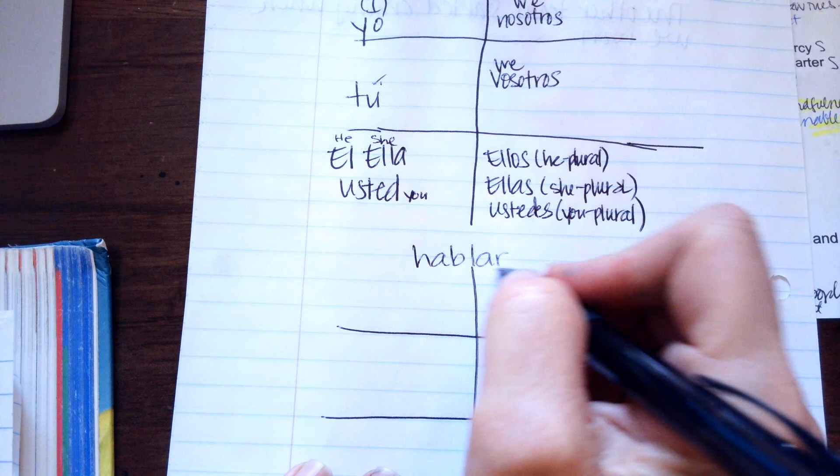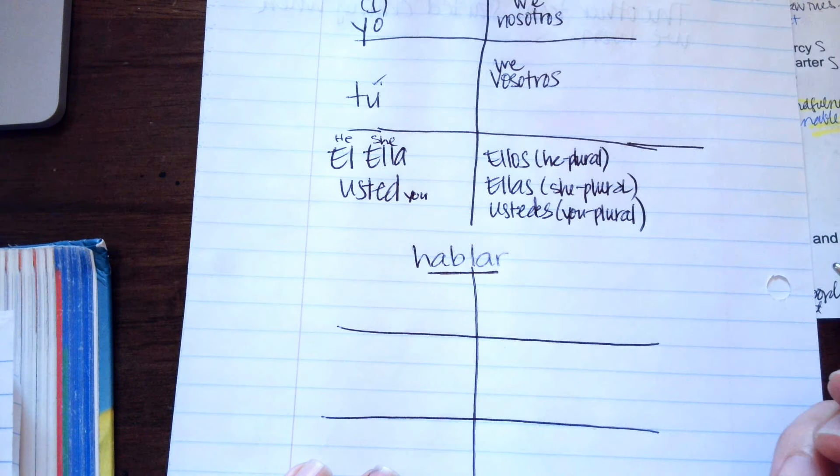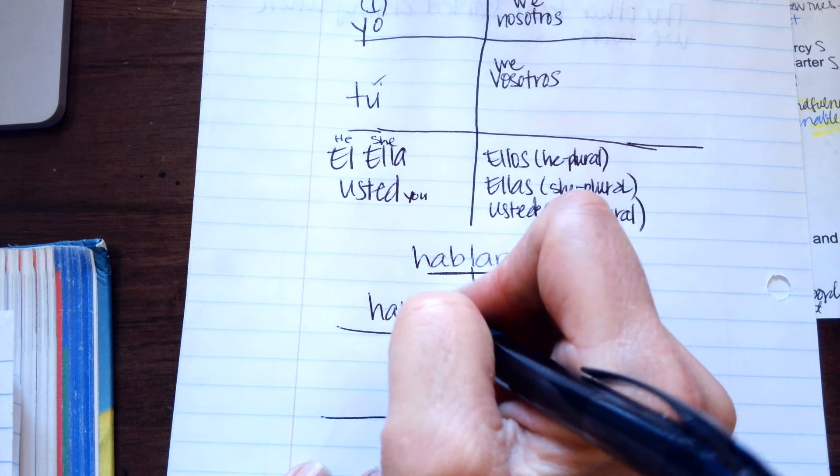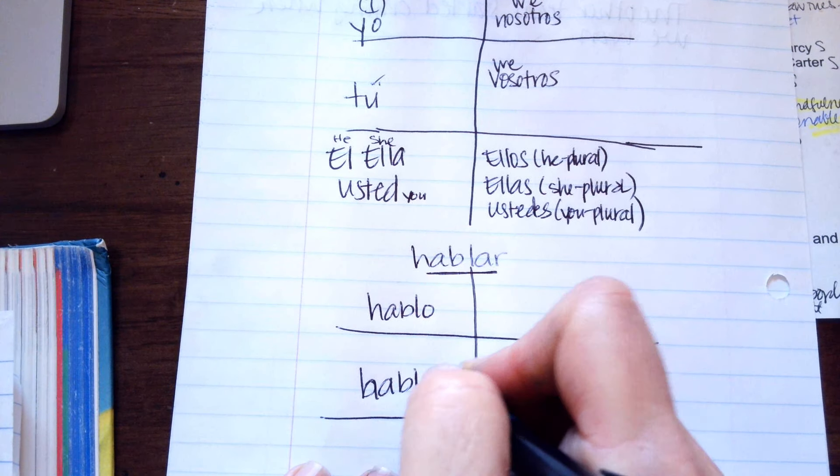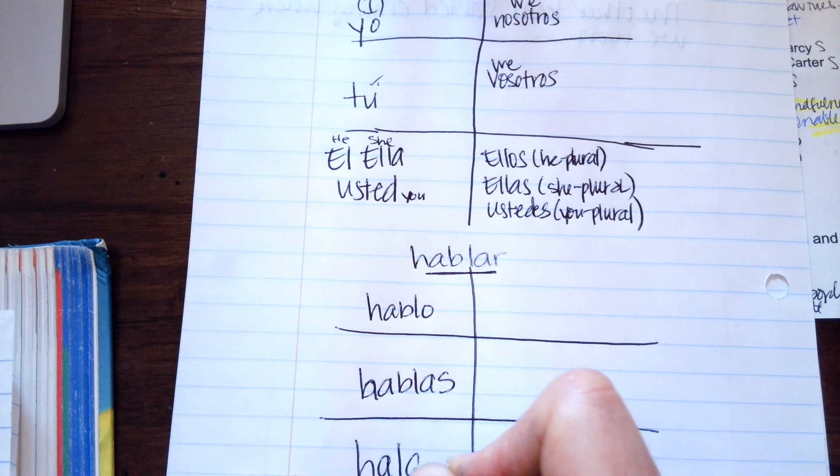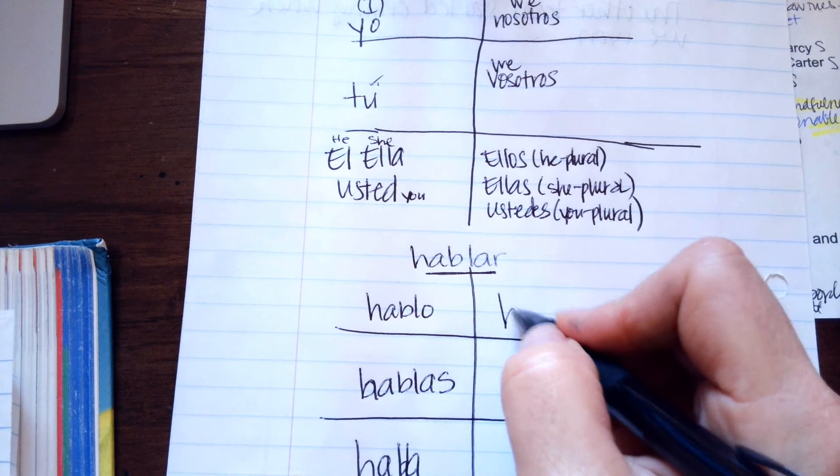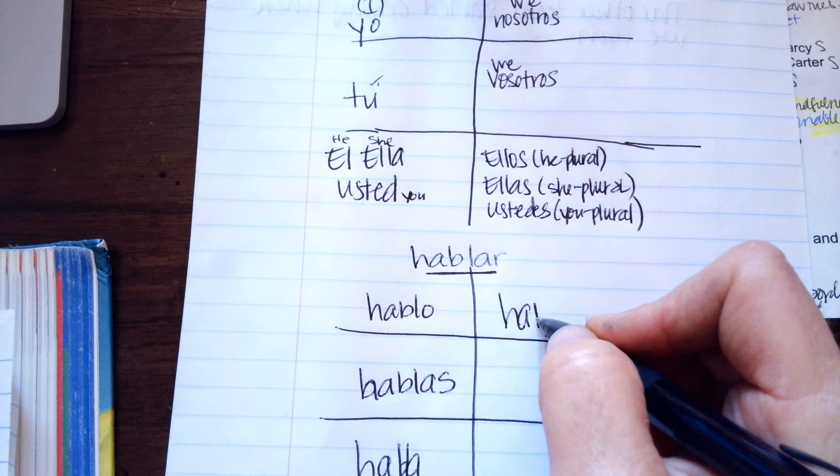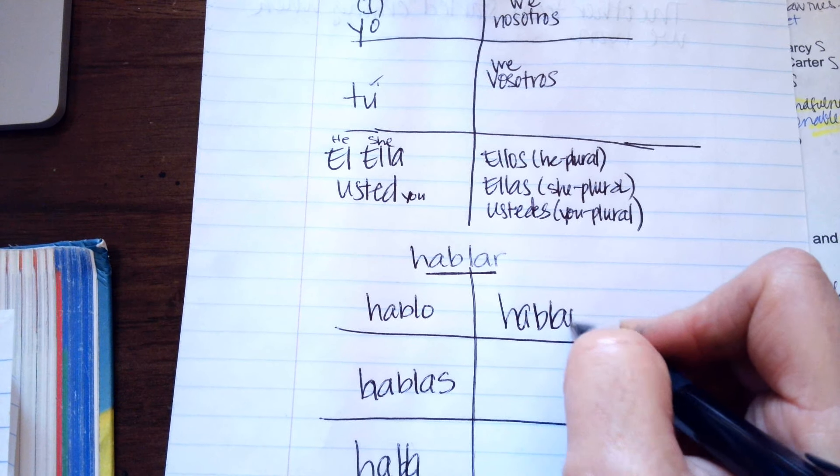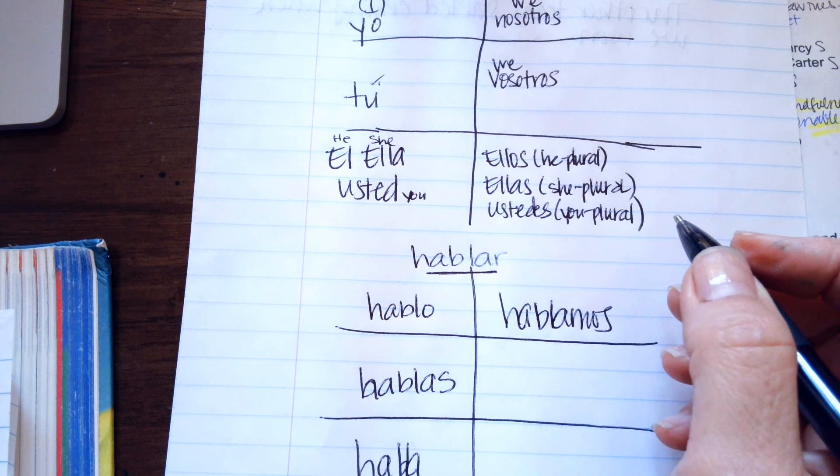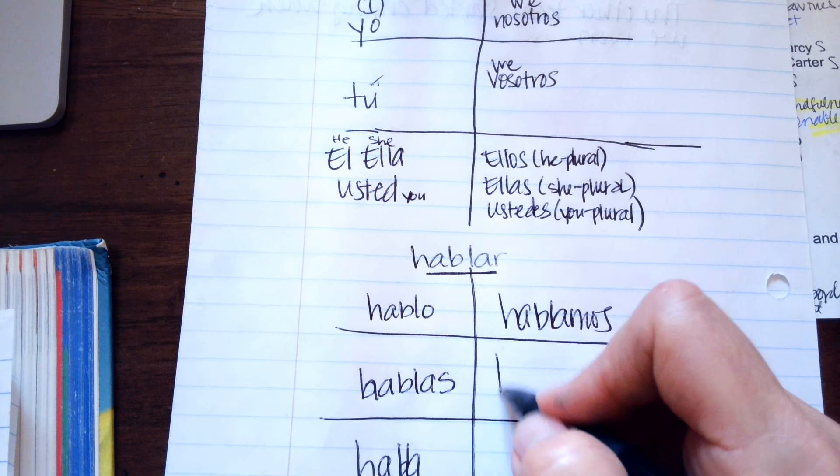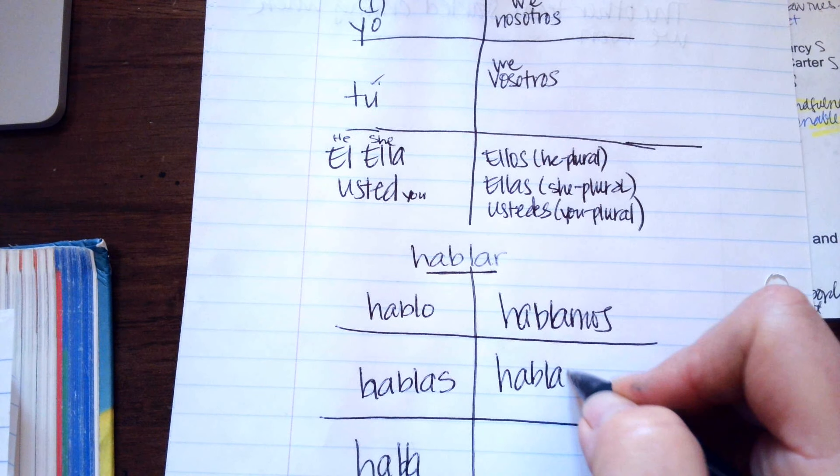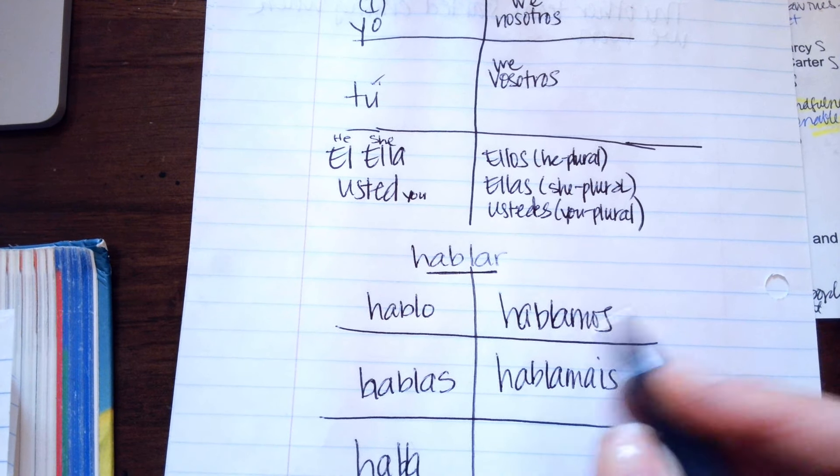You're not going to say hablar, you're going to say hablo, hablas, habla, hablamos. I don't know if they're going to teach you vosotros, but I'll just teach it to you. Hablamos and hablan.